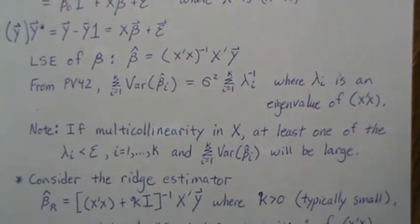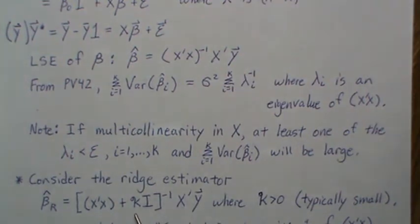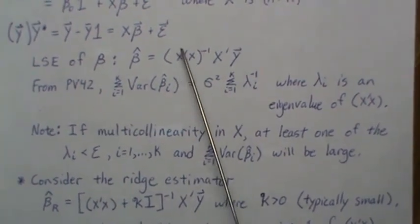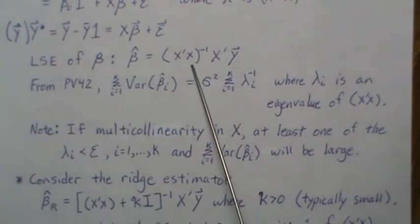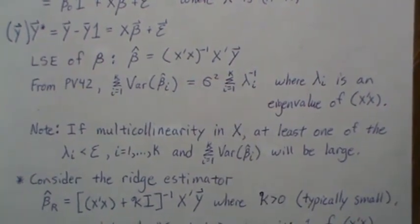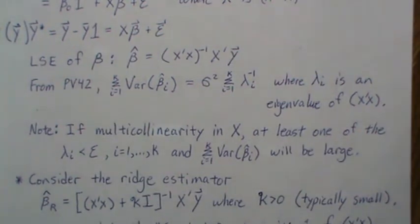We look at what's called the ridge estimator, where we add a small number — called script k or shrinkage parameter — down the diagonal of the X-transpose X matrix. That's why they call it ridge: it's kind of like the ridge of that matrix. This script k is always positive and typically very small.